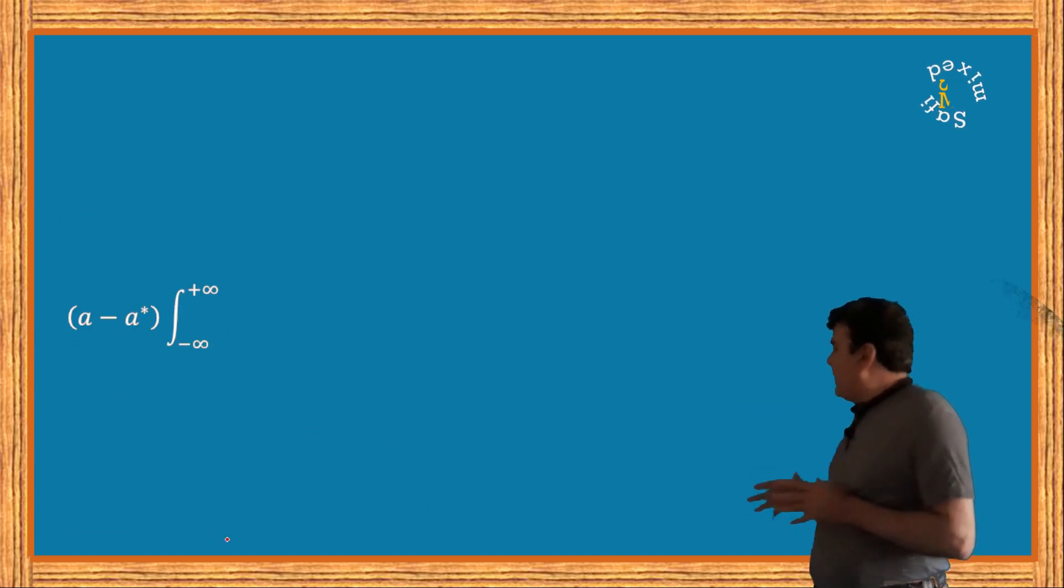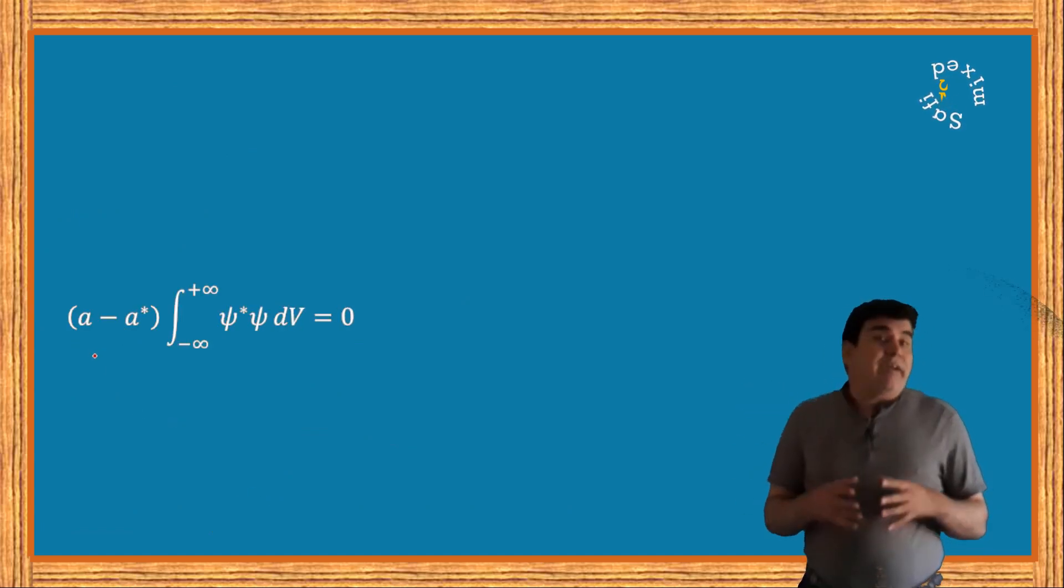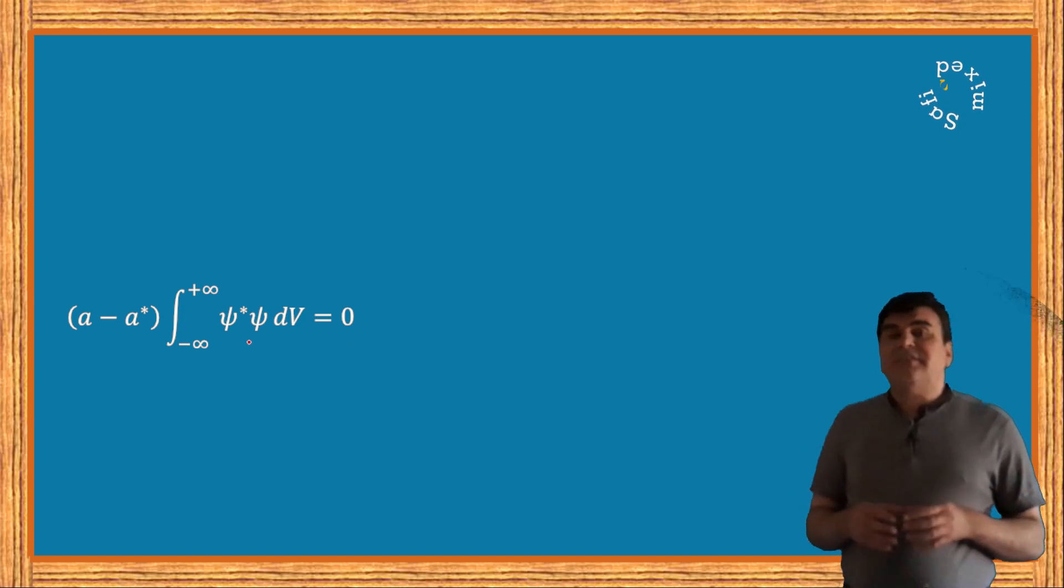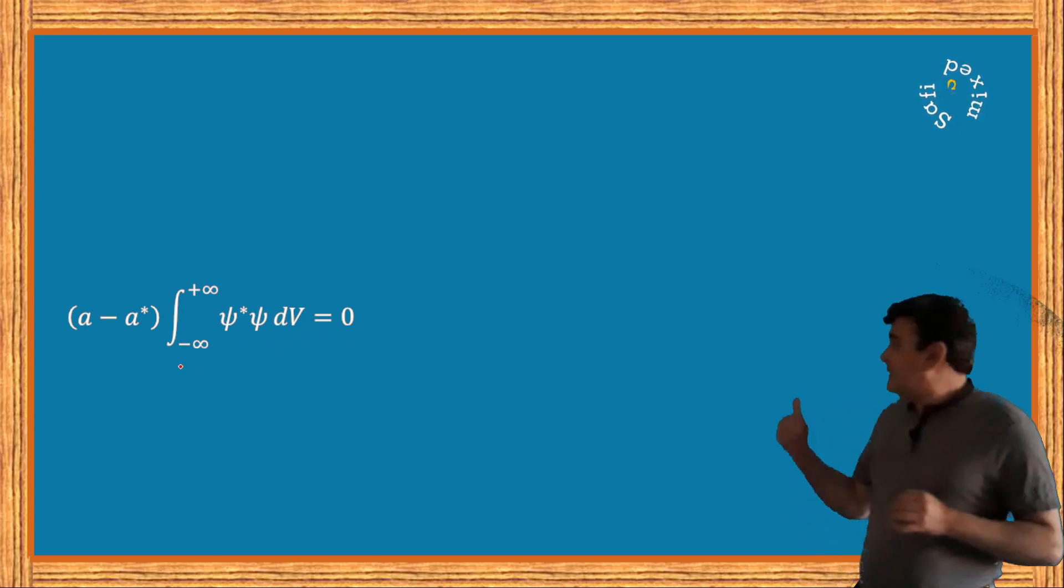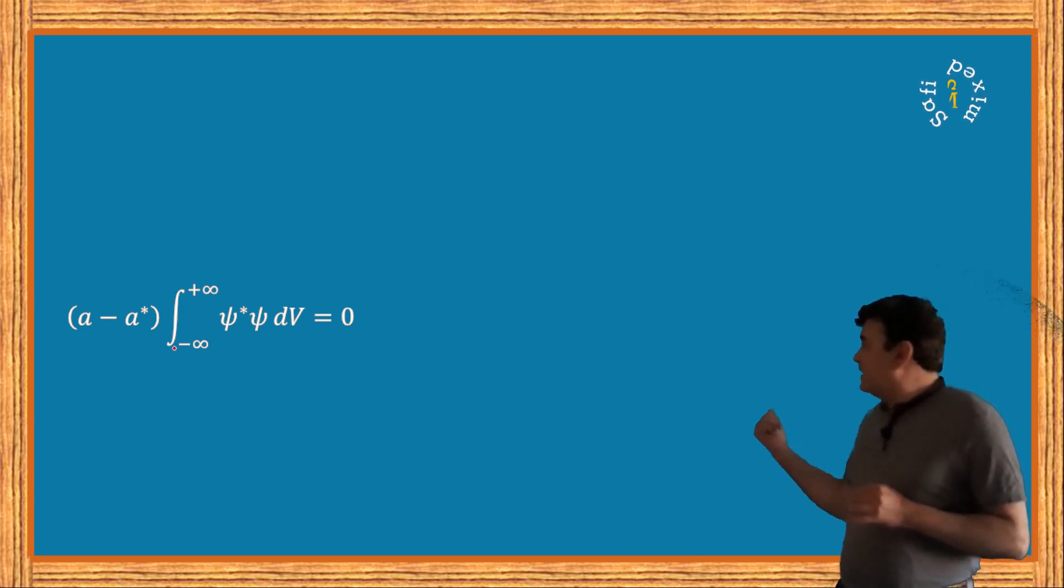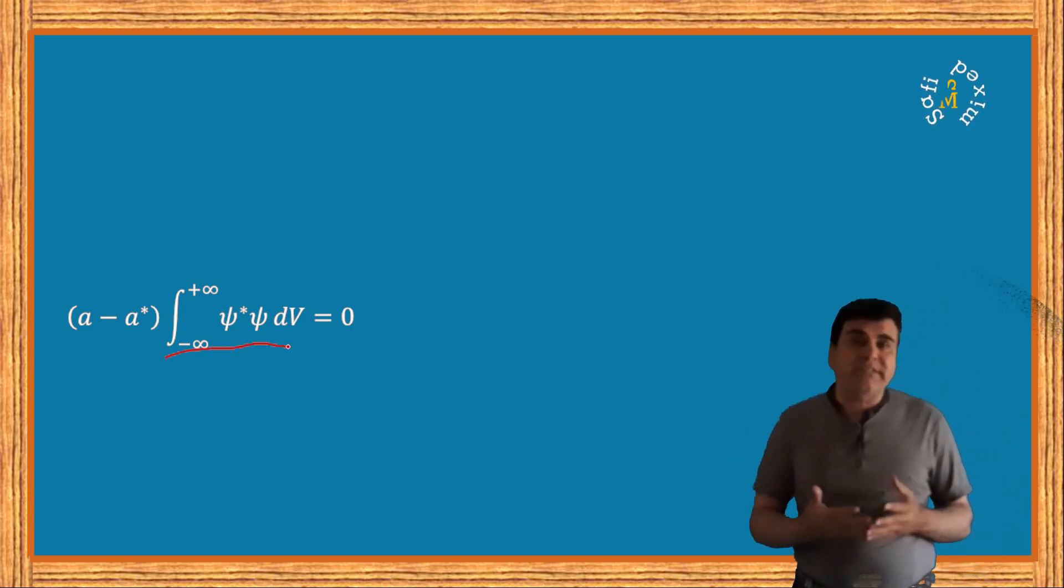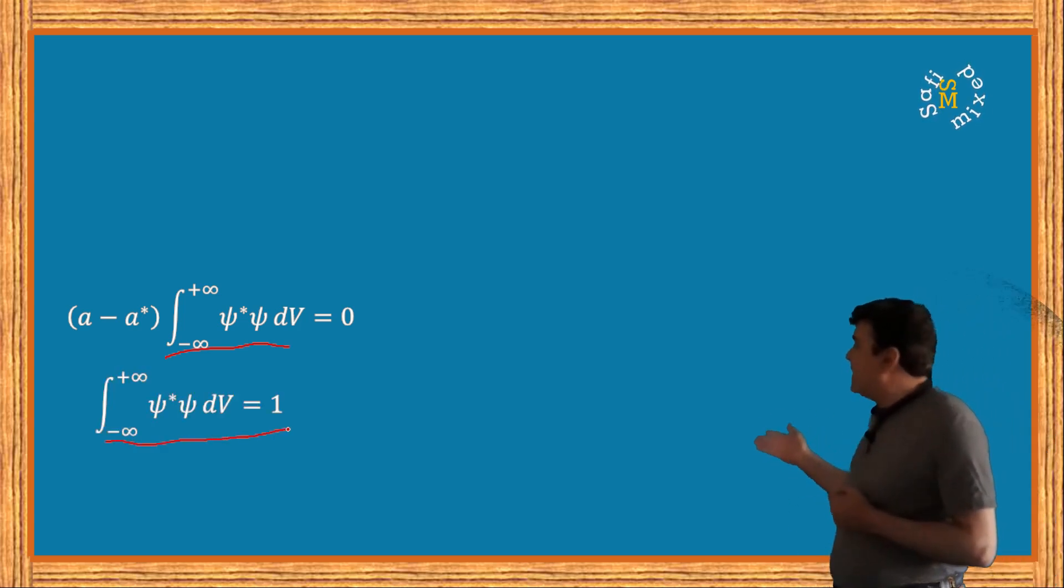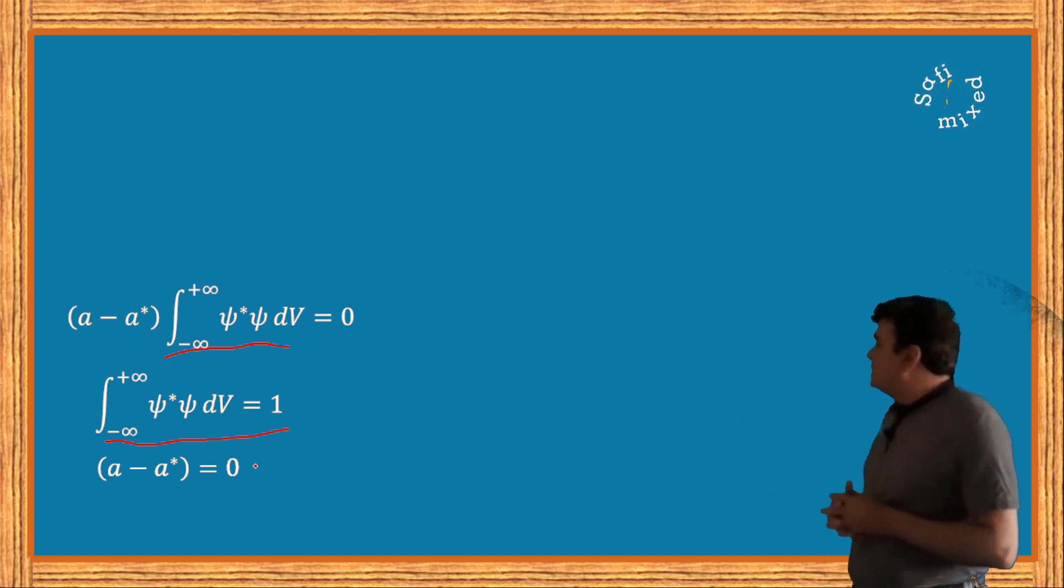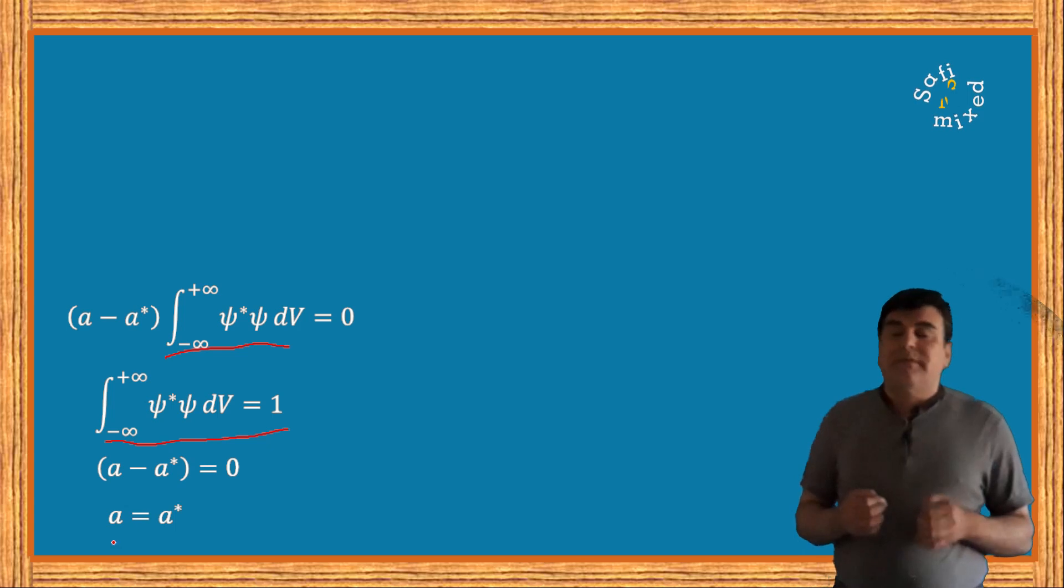Now according to normalization condition on the wave function, the integral part in this equation is equal to one. Therefore, setting the integral part equal to one, the final equation can be written as a - a* = 0, which leads me to write a = a*.